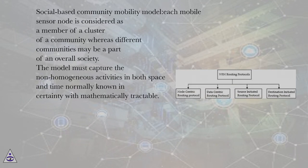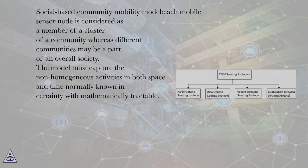Social Based Community Mobility Model: each mobile sensor node is considered as a member of a cluster of a community, whereas different communities may be a part of an overall society. The model must capture the non-homogeneous activities in both space and time, normally known with certainty and mathematically tractable.